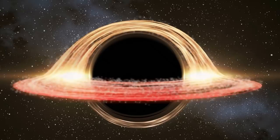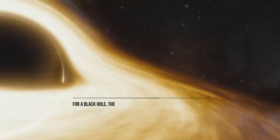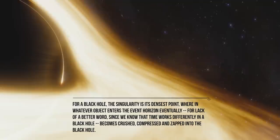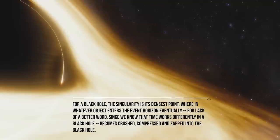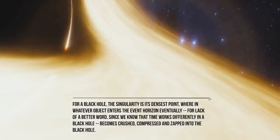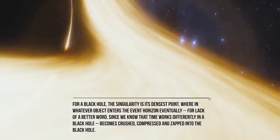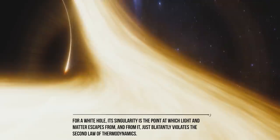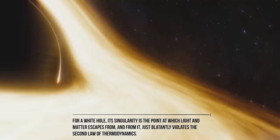Adding to the key similarities that black and white holes have is that they both have a singularity. Do you remember what singularities are to a black hole? For a black hole, the singularity is its densest point, wherein whenever an object enters the event horizon, eventually, for lack of a better word, since we know that time works differently in a black hole, becomes crushed, compressed, and zapped into the black hole. Using that analogy, for a white hole, its singularity is the point at which light and matter escapes from, and from it just blatantly violates the second law of thermodynamics.